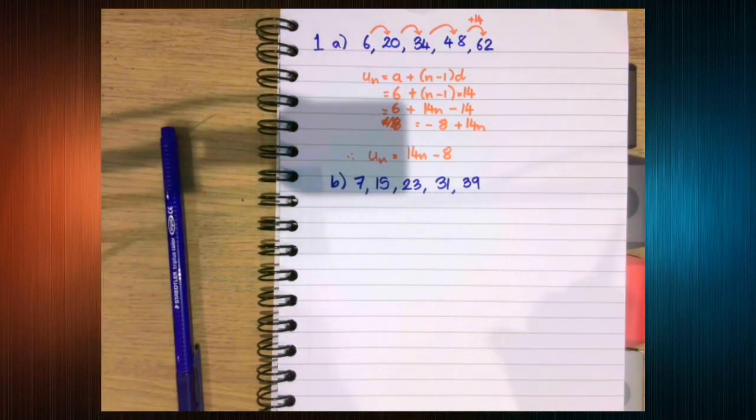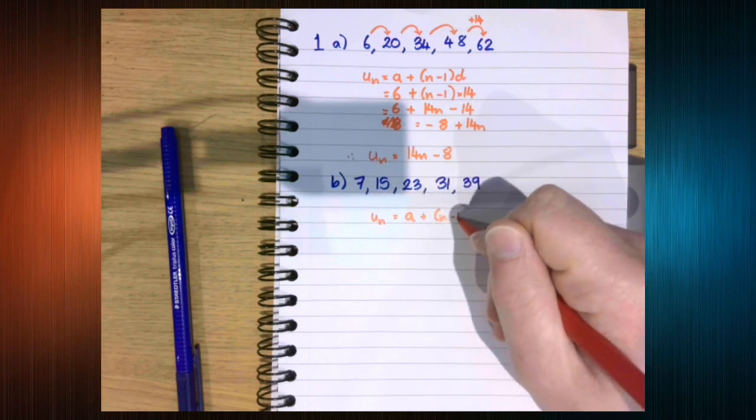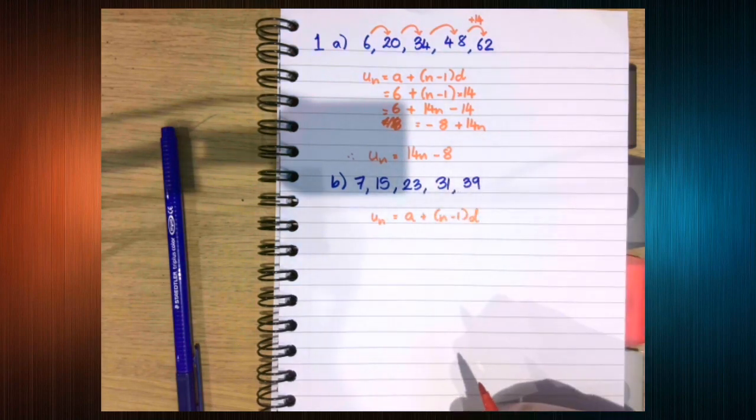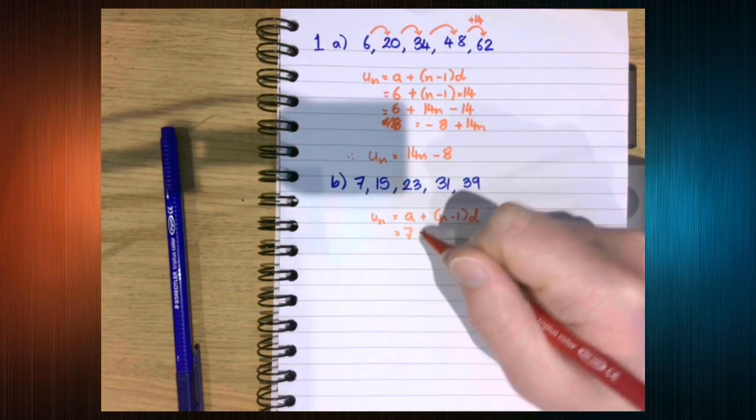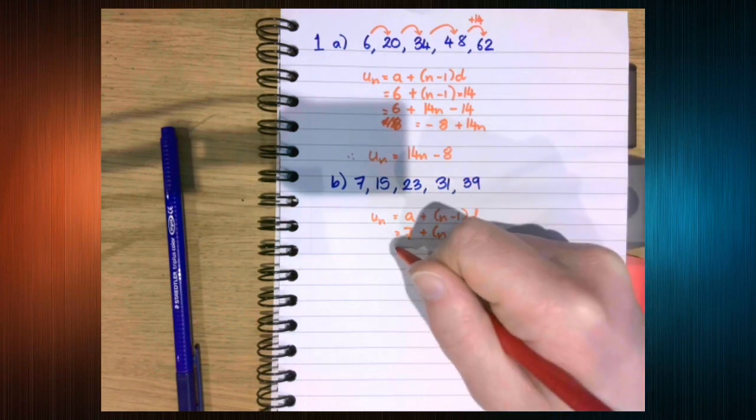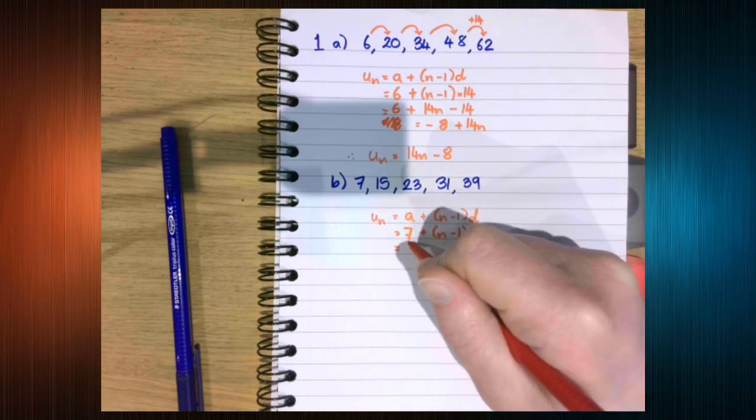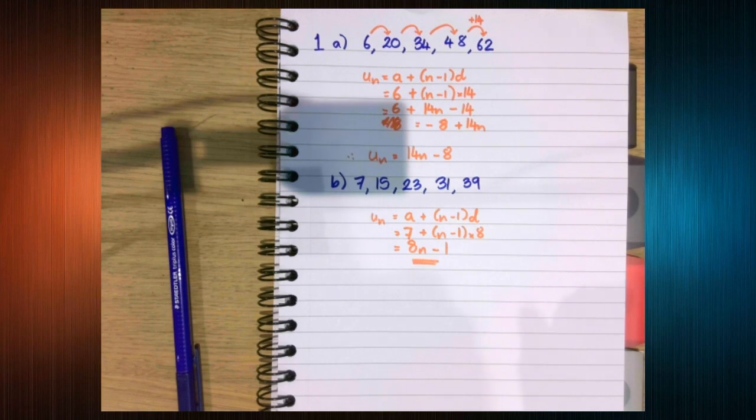Again, our nth term is a plus n minus 1 times d. a is 7. We are adding 8. So our nth term formula is 8n minus 1.